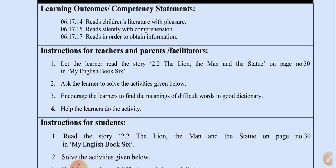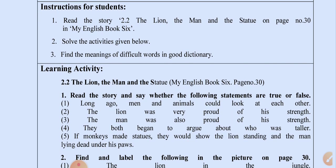Encourage the learners to find the meanings of difficult words in a good dictionary. Help the learners look up difficult words and find their meanings. Help the learners do the activity. Instructions for students: Read the story 'The Lion, the Man and the Statue' on page number 30 in My English Book 6.